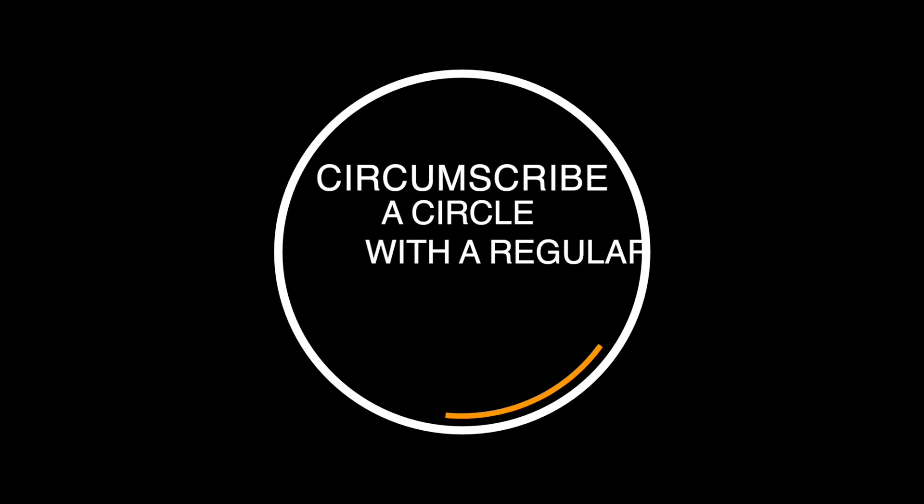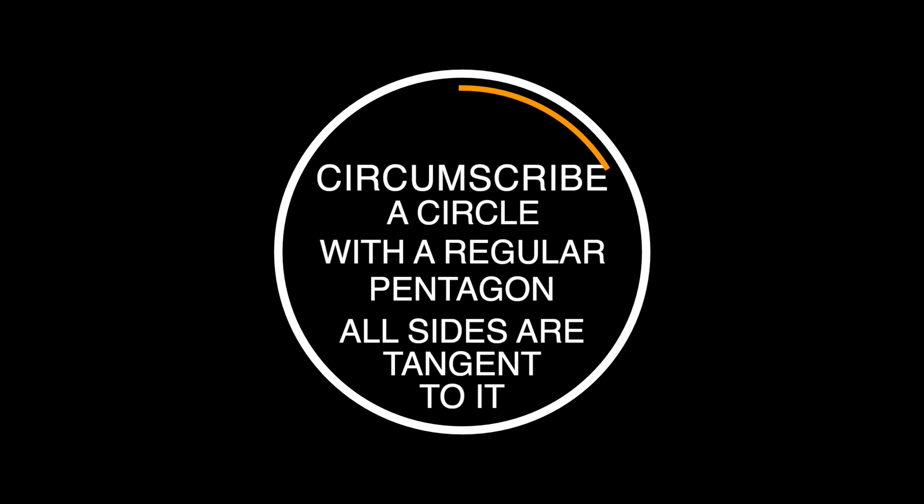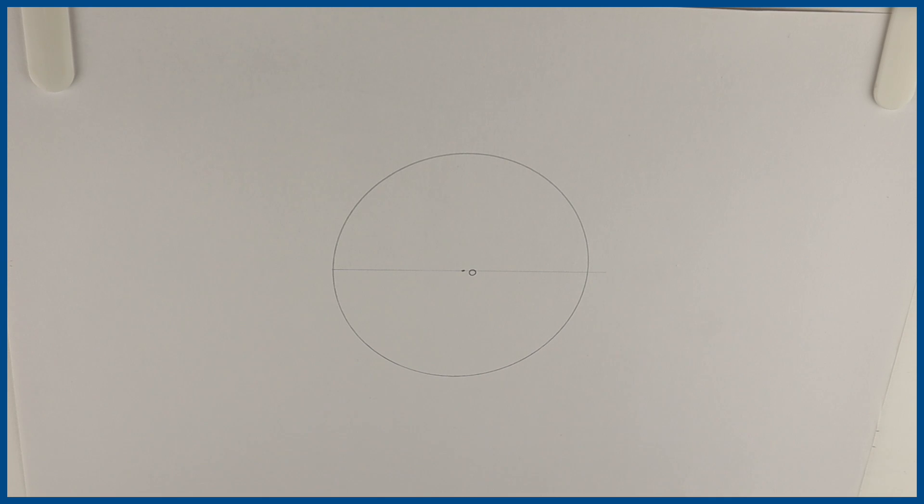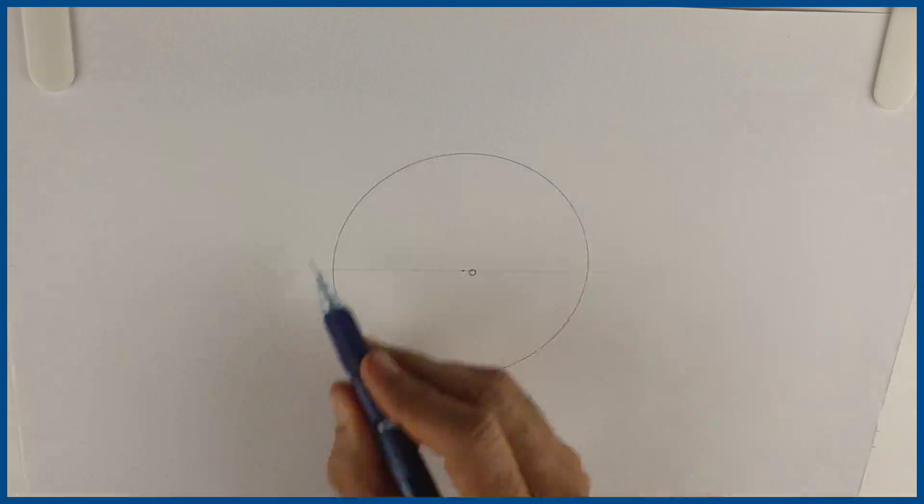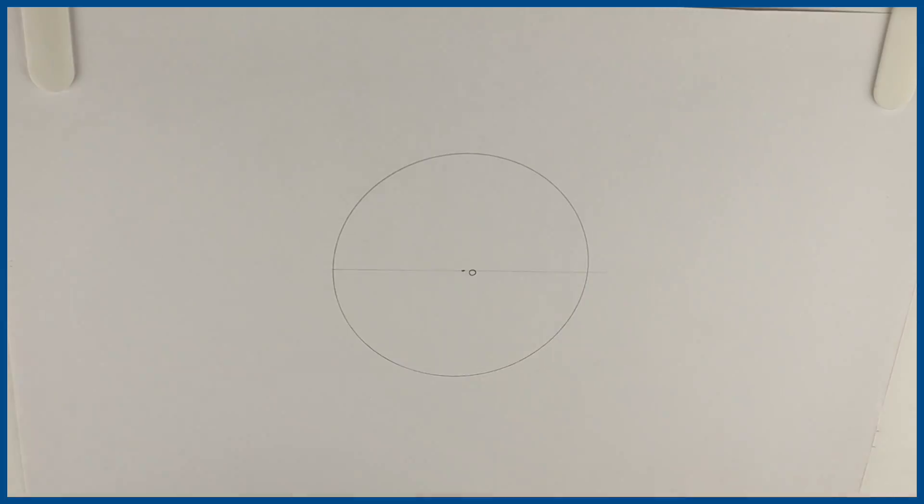Welcome to technical drawing. Today we are going to circumscribe a circle with a regular pentagon and all sides are tangent to it. So first we will draw a circle of given radius. Then you draw one horizontal line.